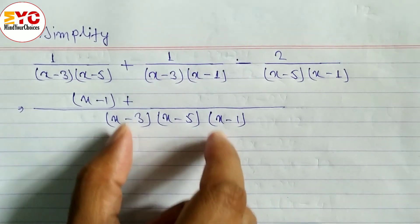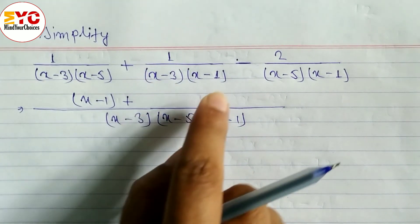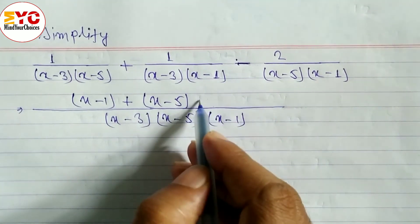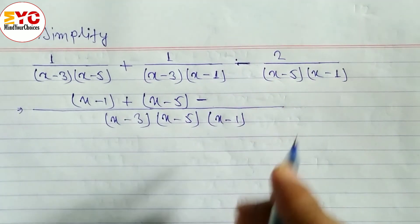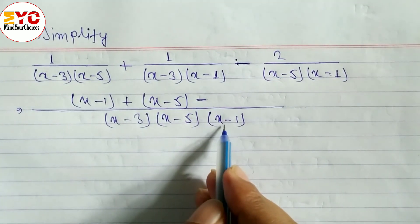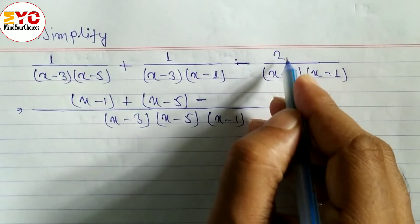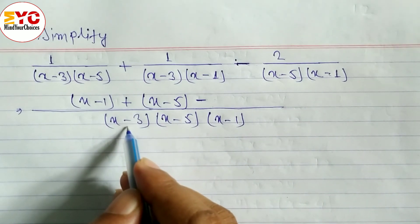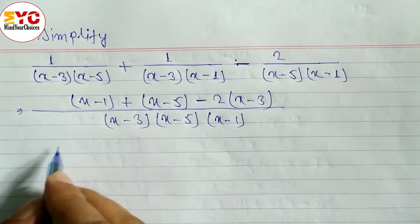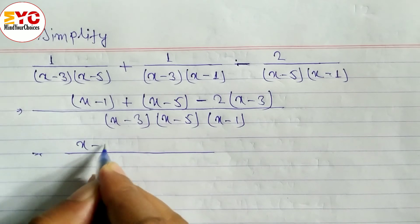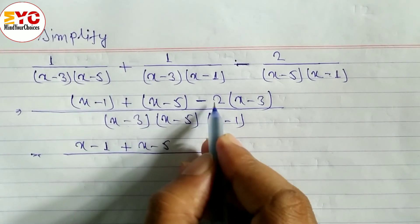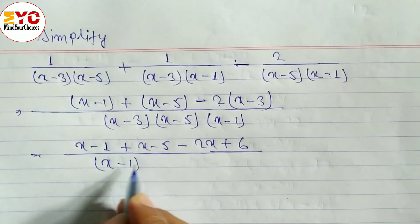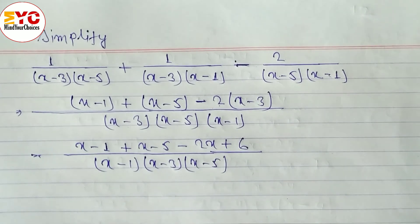Dividing the denominator for each term: For the first term, x minus 3 and x minus 5 cancel — remaining is x minus 1, multiply by 1, giving x minus 1. Plus. For the second term, x minus 3 and x minus 1 cancel — remaining is x minus 5, multiply by 1, giving x minus 5. Minus. For the third term, x minus 5 and x minus 1 cancel — remaining is x minus 3, multiply by 2, giving 2(x minus 3).